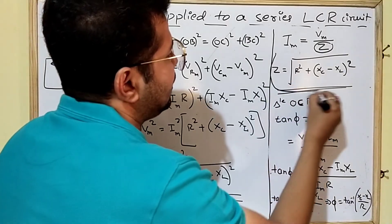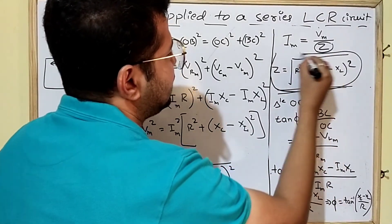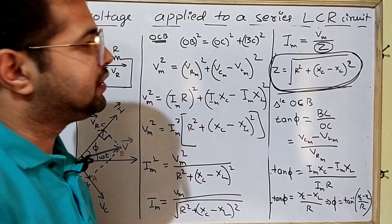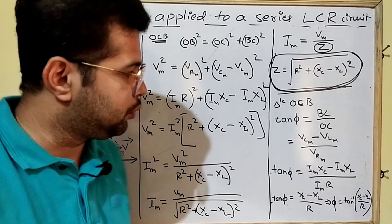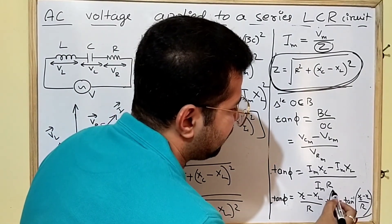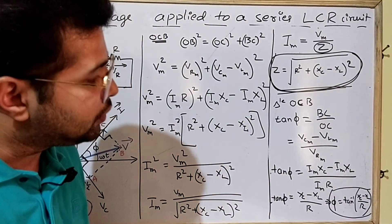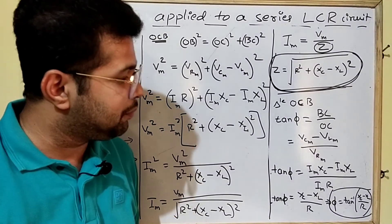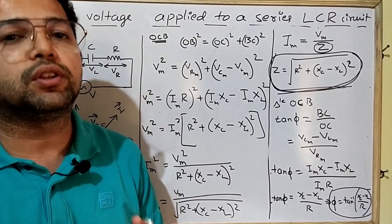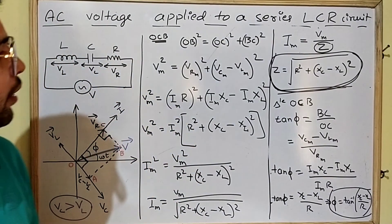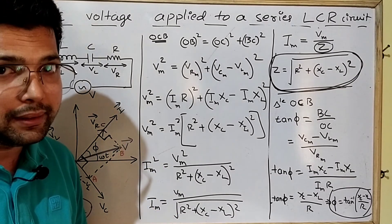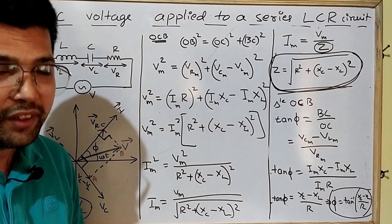So this is the expression for impedance: Z = √[R² + (XC − XL)²], and this is the equation for phase angle: phi = tan⁻¹[(XC − XL) / R]. This is the most important question for five marks in the public examination. Thank you very much.